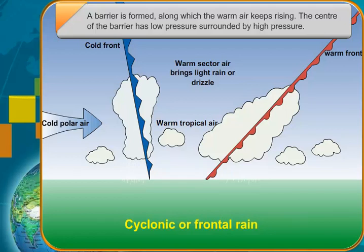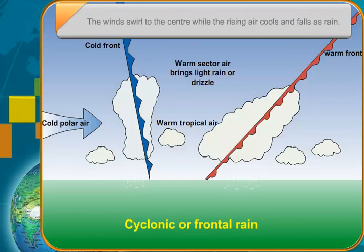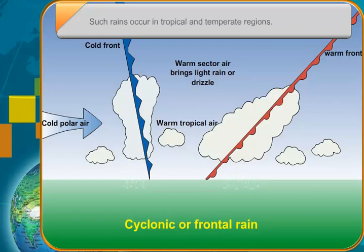The cyclic movement of water between the earth's surface and the atmosphere because of evaporation and condensation is called the water cycle.